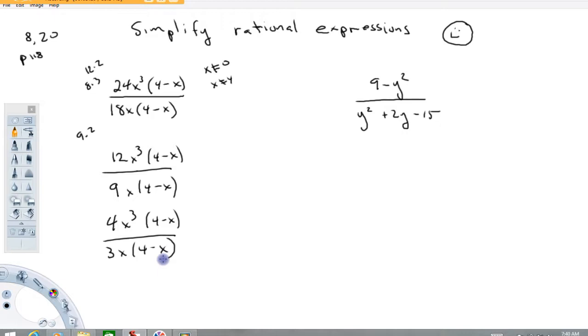Now you might be thinking, well couldn't I have said that both of these are divisible by 6? And the answer is yes. We could have done 24 divided by 6 is 4, 18 divided by 6 is 3. That would have been just fine too.